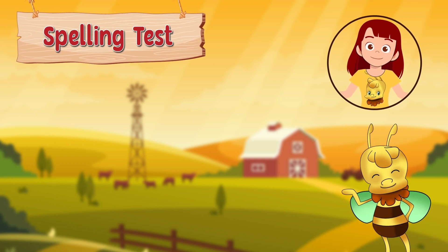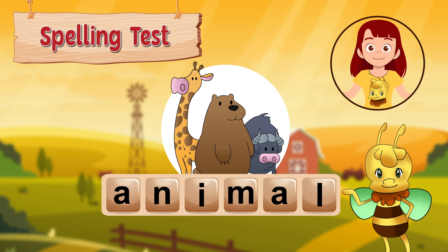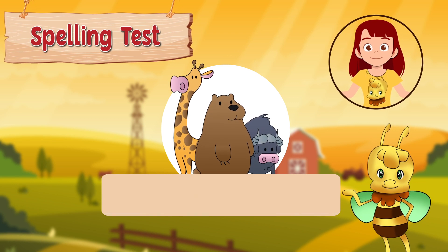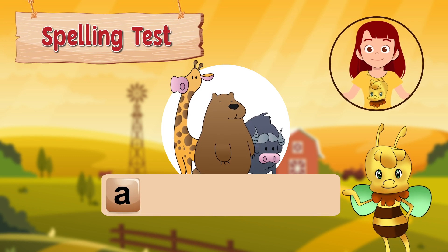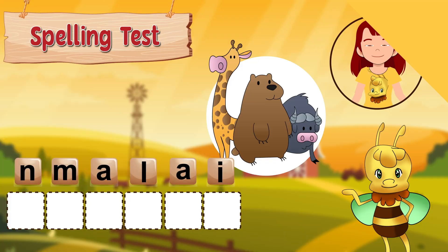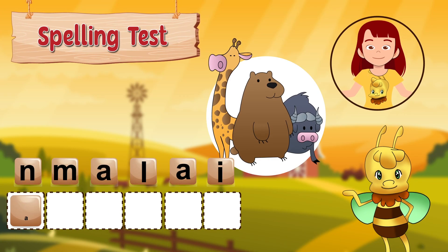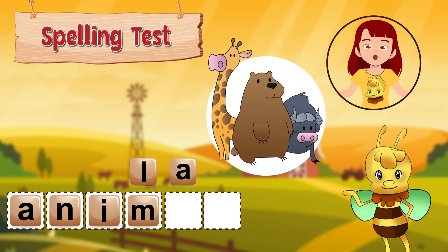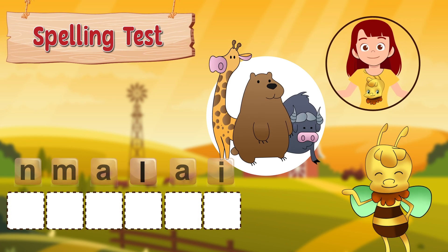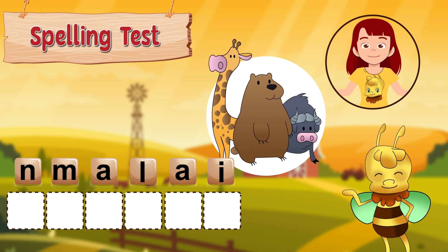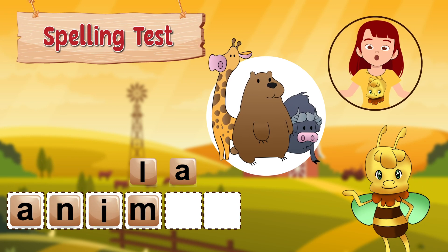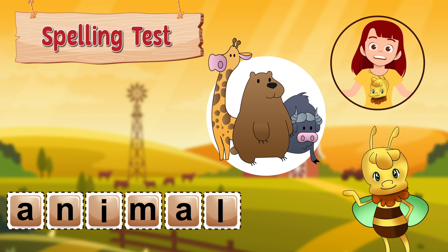The next word is Animal. There are lots of animals in the world, like cat, panda, and monkey. Animal is spelt A-N-I-M-A-L. Did you get it right?